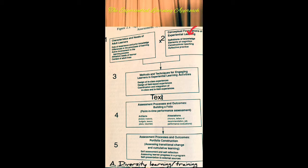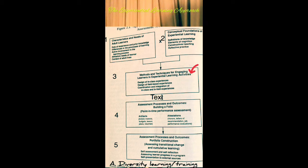For Box two, applying diversity training through the conceptual foundations of experiential learning, we need to look at the context of instruction — whether it is a heterogeneous or homogeneous group composition in different learning activities. Moving to Box three, applying diversity training to methods and techniques for engaging learners in experiential learning activities.